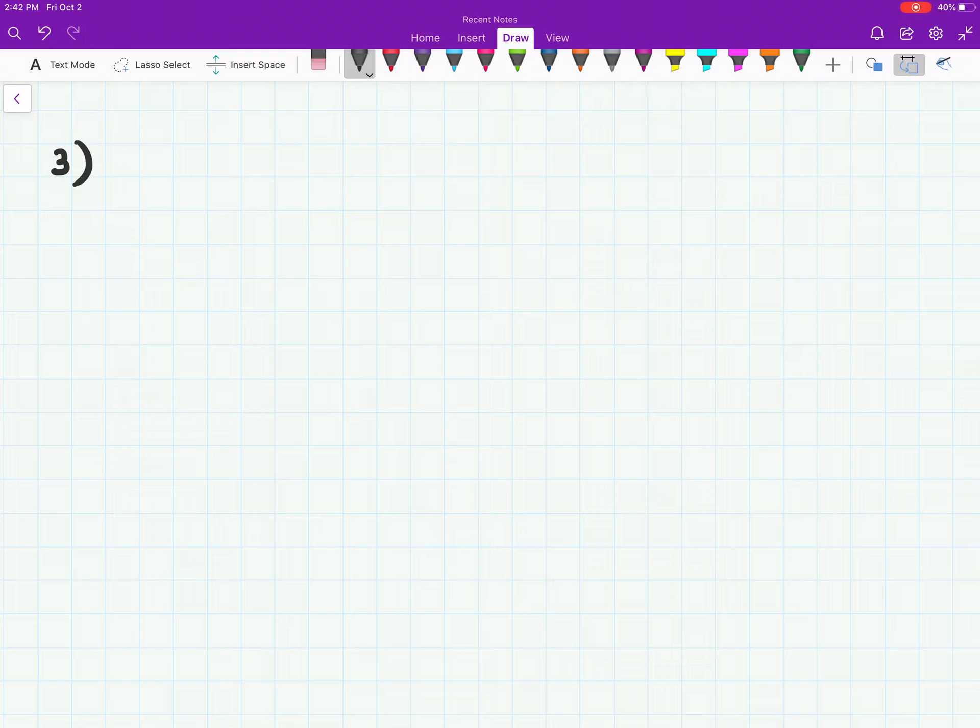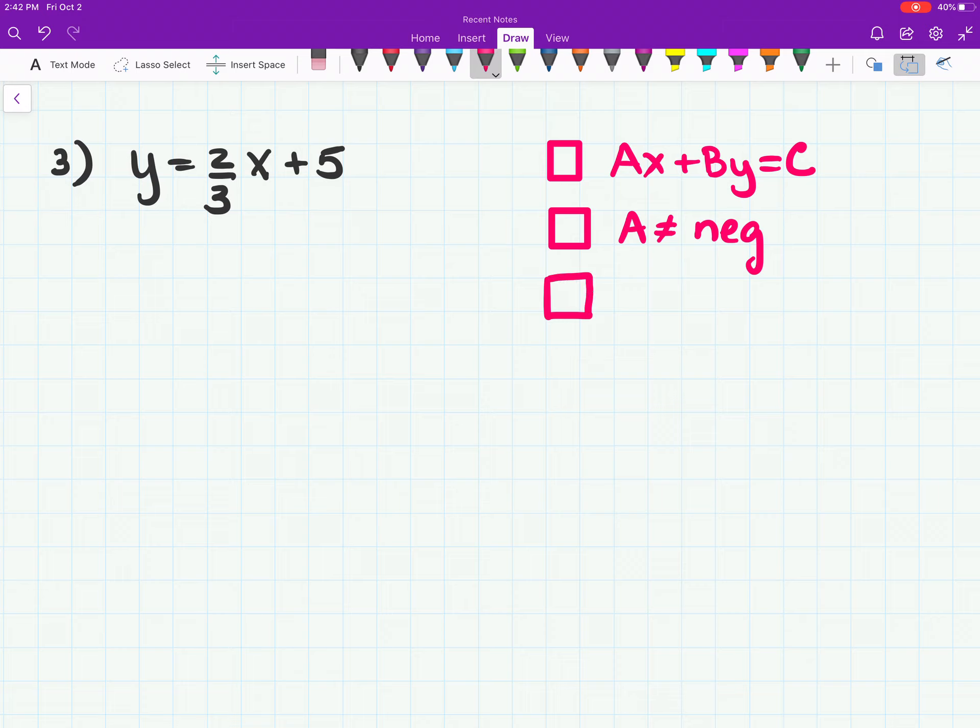Number, example 3. y equals 2 thirds x plus 5. What form is this one in? This is in my most beautiful form. Very easy to graph from. We start at 5, go up 2 over 3. Perfect. That's in slope intercept form. But is that the form I asked for? It is not. I asked for standard ax plus by equals c. A cannot be negative. This should start becoming where you kind of have it memorized. What's next? No fractions or decimals. We don't like those. That's not standard form. And then what's the last one? GCF. Greatest common factor has to equal 1. Let's start.